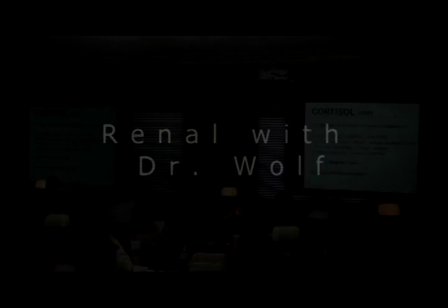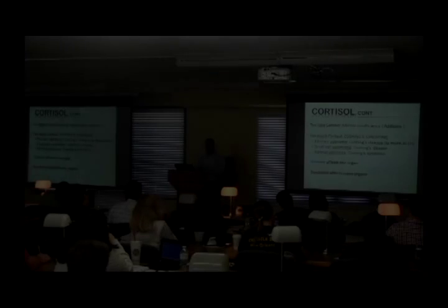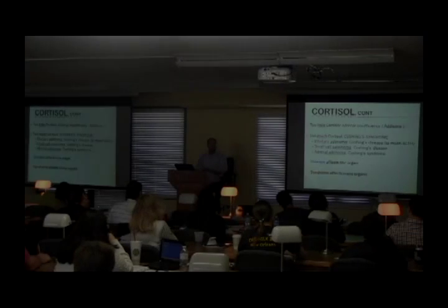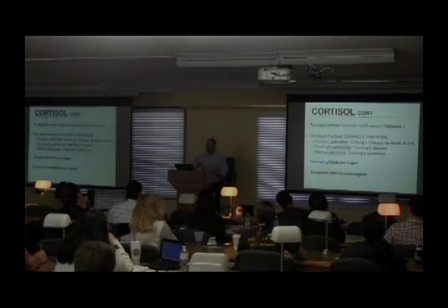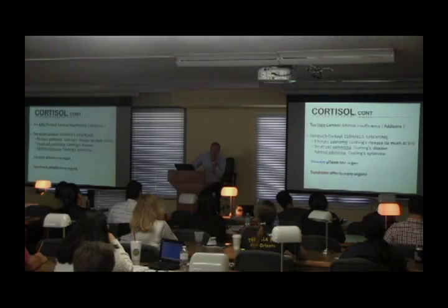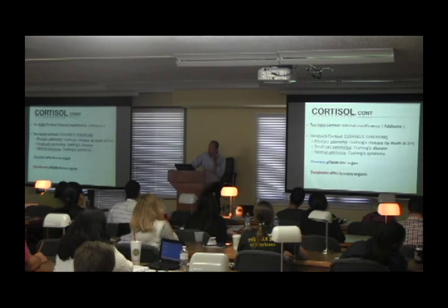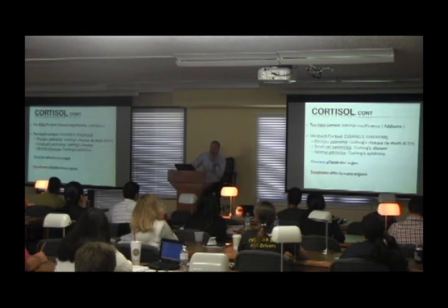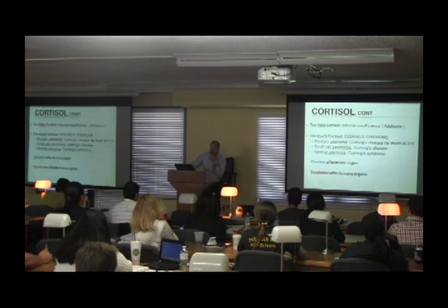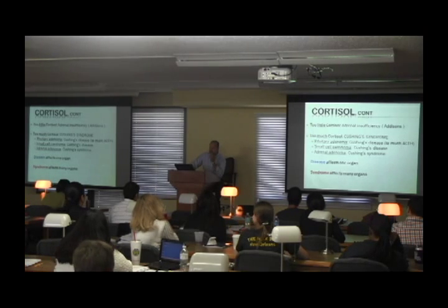Now, Cushing's — describe a Cushing's patient to me. Moon face, buffalo hump, truncal obesity, purple striae — looks like a zebra.